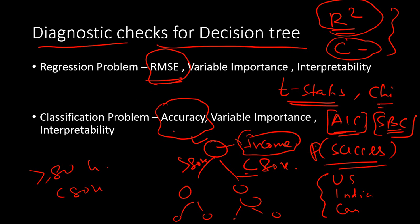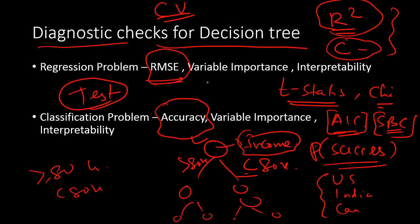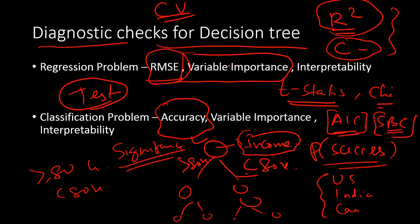There are many kinds of cross-validations you can use — there is a video in this channel on different types of cross-validation, linked in the description. Significance testing is one thing that sets regression models apart from tree models: regression gives you t-statistics and chi-square statistics. In decision tree you don't have that. But you can find out variable importance to know which variable is most important just by looking at the hierarchy of variables used in making the decision tree. That's another diagnostic check you can do.